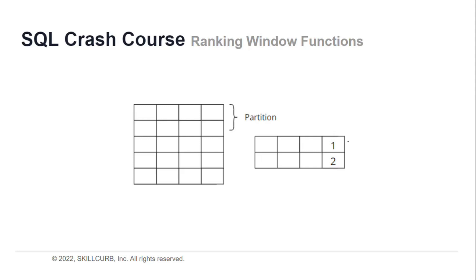For the ranking window function, what actually happens is it divides the result set into different partitions on the basis of some column, and then all the rows in each partition are assigned ranks starting from one. These ranks can also be given on the basis of some column within the partition.